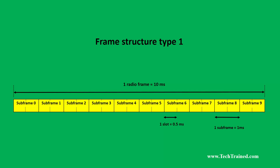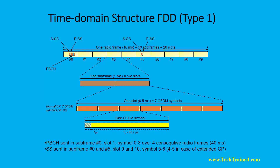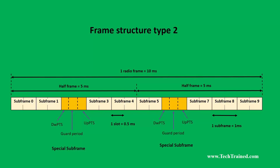What you are seeing right now is the radio frame for FDD. Each radio frame has a duration of 10 milliseconds, and in this case the downlink and uplink radio frames use two different frequencies. This is the structure for the FDD radio frame, or Frame Type 1.